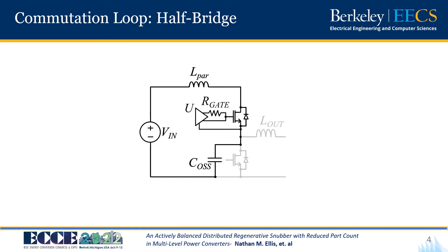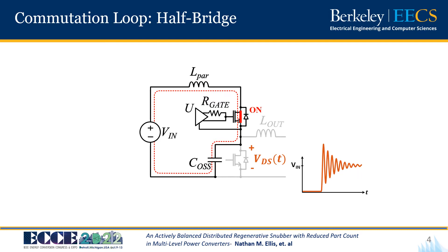Since this is a high-frequency event the output inductor acts as a high-impedance choke and can be ignored. If we then plot the voltage on C_OSS as the high-side FET turns on and the highlighted commutation loop begins to conduct, we see that V_DS shoots upwards towards the input voltage. But as a result of parasitic inductance we get an underdamped second-order response with one-half CV² of energy being dissipated as the ringing decays.